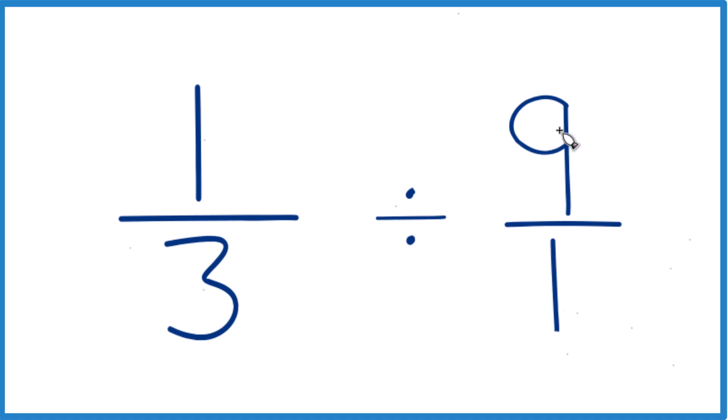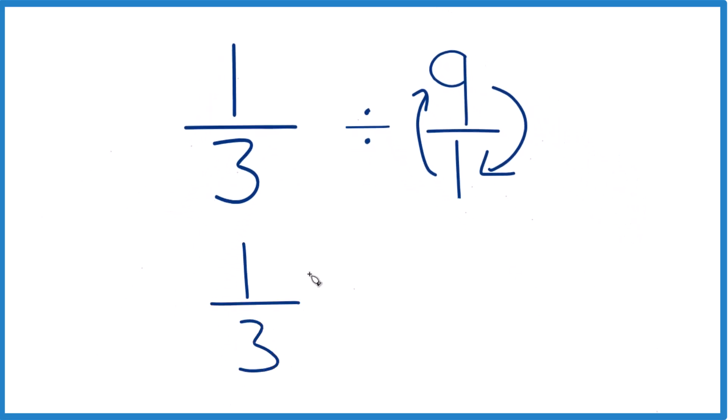Next, we're going to take the reciprocal of nine over one. So the denominator comes to the top, numerator goes to the bottom. That way you take your one-third here, and instead of division, it's multiplication, and we're multiplying by that reciprocal of nine over one. So we have one on top, nine on bottom. So one-ninth.